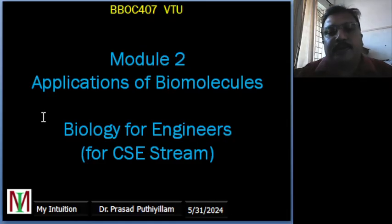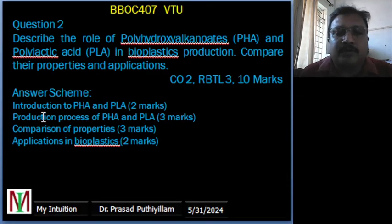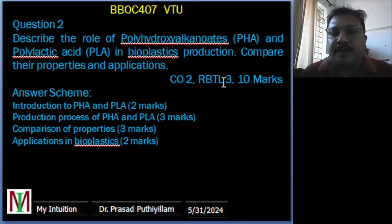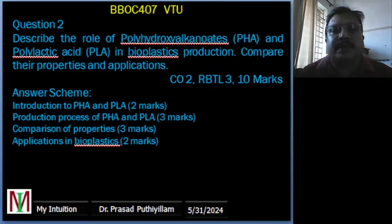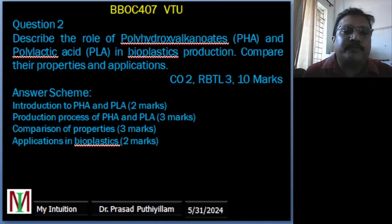We are moving to module 2, Applications of Biomolecules, for Biology for Engineers for computer science stream students. For other stream students, there is a separate class video series, BBOK407. Question number 2 of module 2: describe the role of polyhydroxyalkanoates (PHA) and polylactic acid (PLA) in bioplastic production. Compare their properties and applications — a Bloom's taxonomy level 3, 10-marks carrying question. The answer scheme is: Introduction 2 marks, Production Process 3 marks, Comparison of Properties 3 marks, Applications 2 marks.